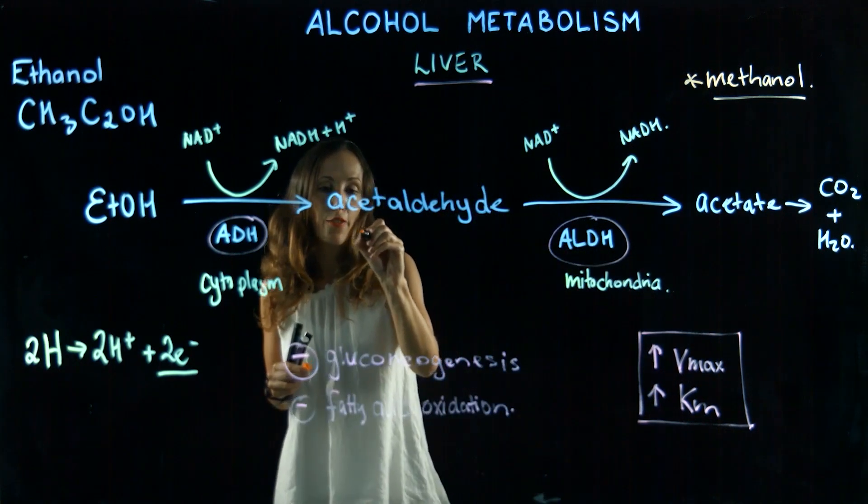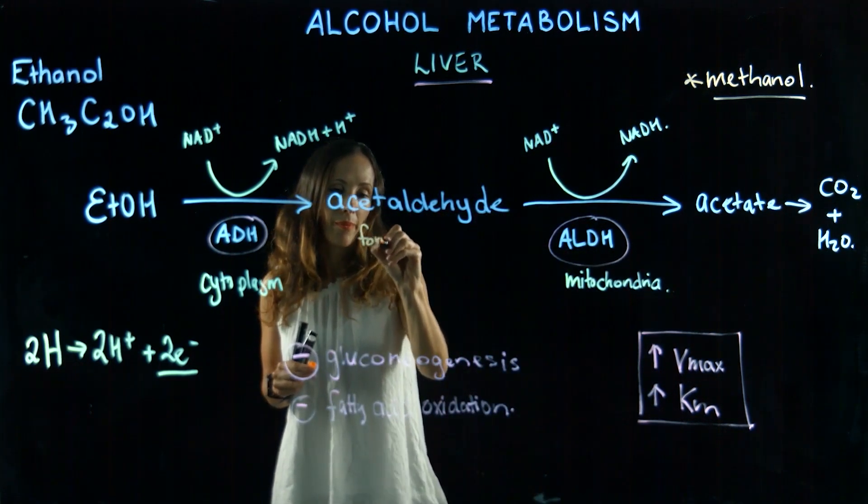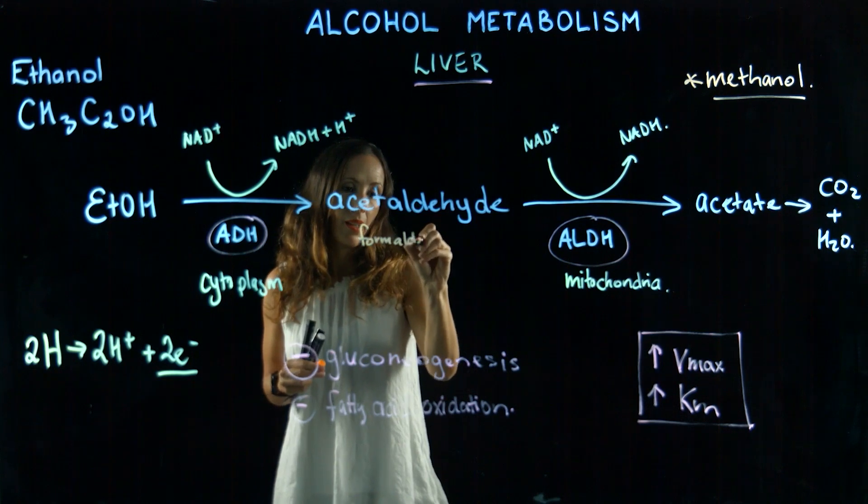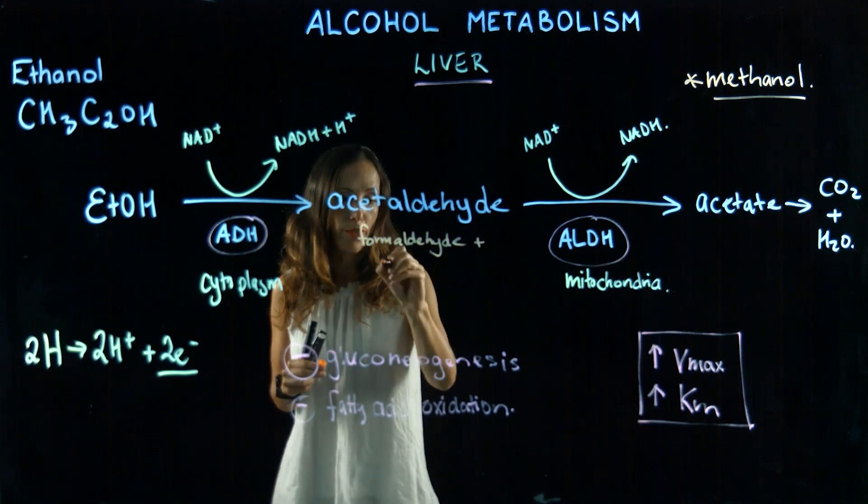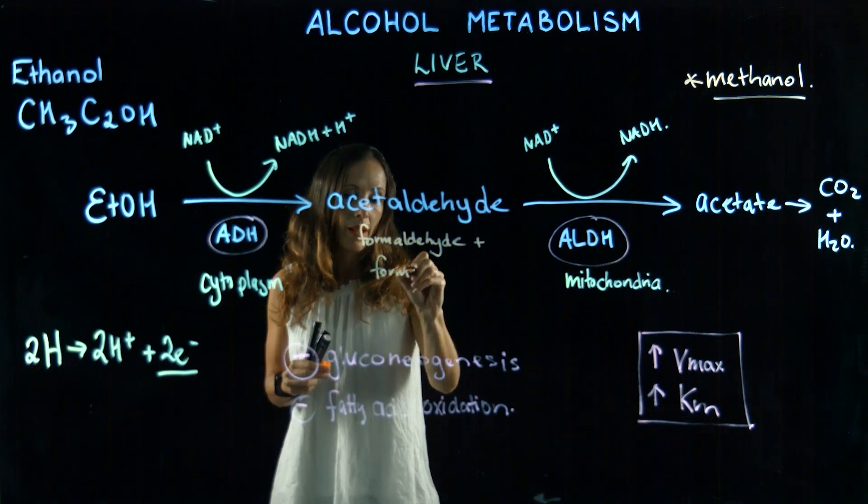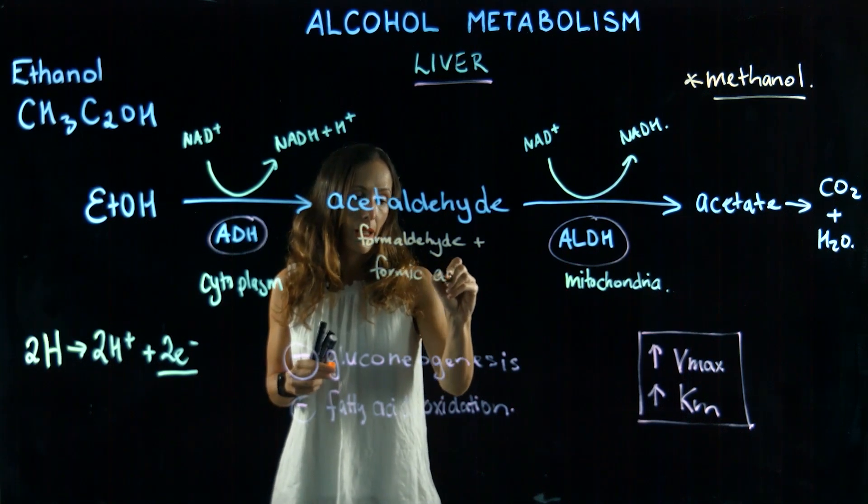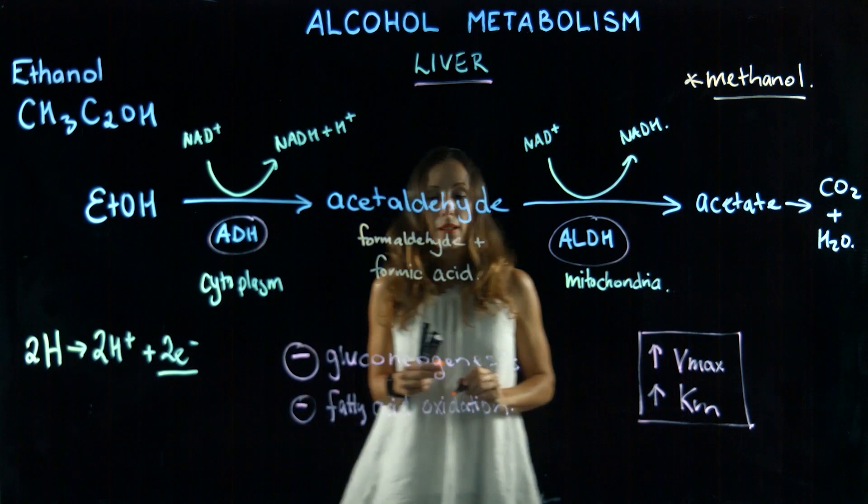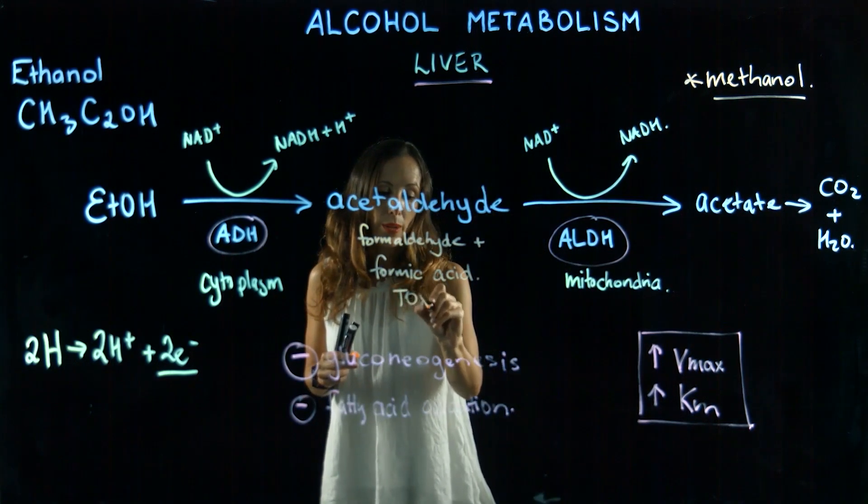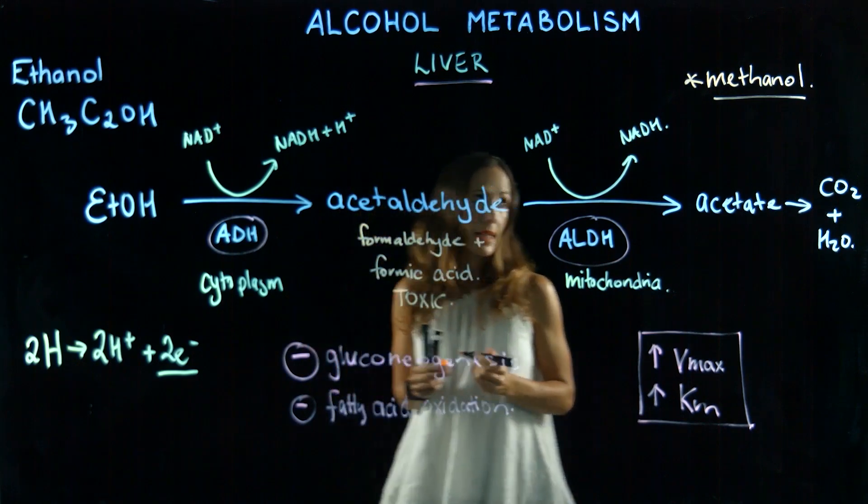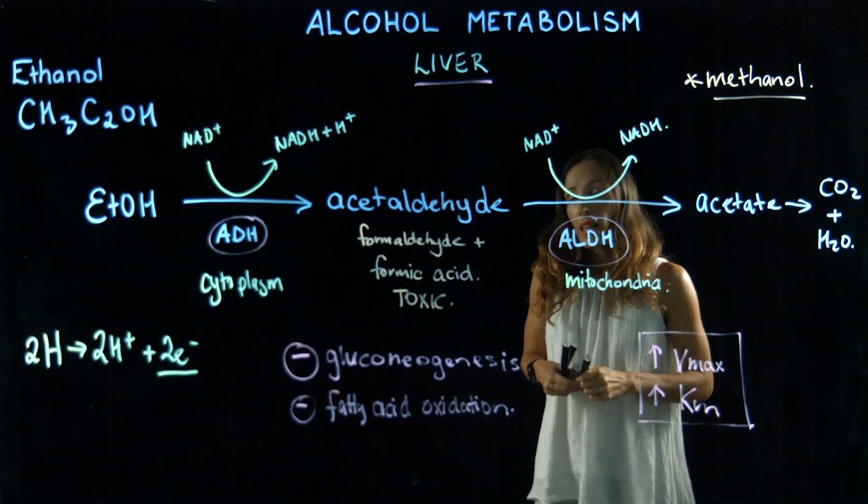When we have methanol being broken down, the product here is formaldehyde. You've probably known that formaldehyde and also formic acid are very toxic. If we have an amount of this being built up, that can cause death and it can cause blindness.